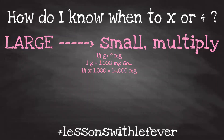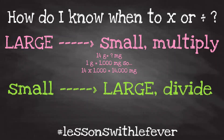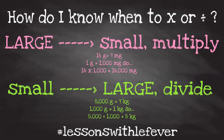On the flip side, anytime I'm going from a smaller unit to a larger unit, I need to divide. If I have 8,000 grams and I'm converting those grams into kilograms, the first thing I need to know is that a gram is smaller than a kilogram, so that tells me I need to divide. How do I know what number to divide by? Here's what you need to know: 1,000 grams is equivalent to 1 kilogram. So 8,000 divided by 1,000 equals 8 kilograms.